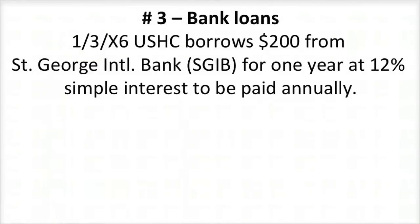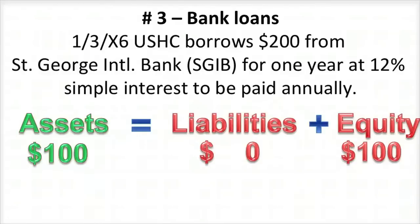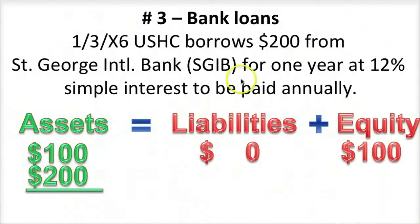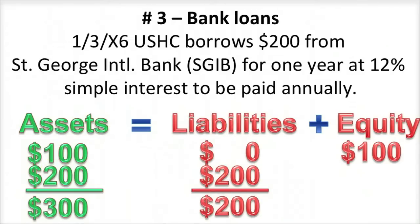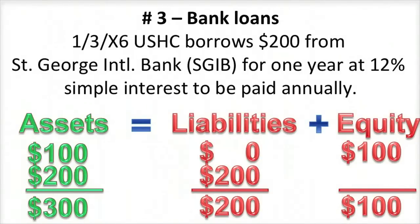On day three, Spencer realizes he needs more money and obtains a bank loan. On January 3rd, X6, he borrowed $200 from St. George International Bank for one year at 12% simple interest, to be paid annually. The previous balance sheet showed assets of $100, all claimed by the equity partners. USHC borrowed $200, increasing cash assets to $300. Liabilities increased $200 because the bank provided that financing, so liabilities are now $200 and equity is unchanged. Assets of $300 equal total liabilities and equity of $300.